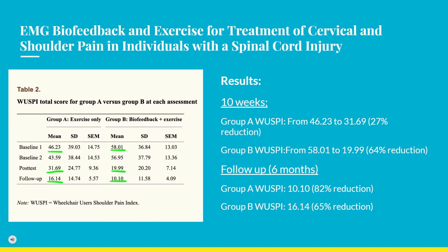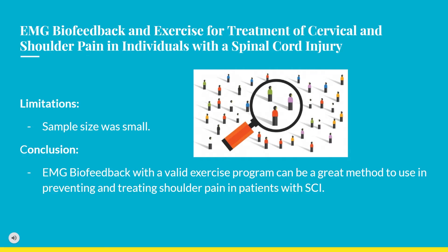At 10 weeks, participants who received EMG biofeedback plus exercise had a significant reduction in shoulder pain, whereas those who received only exercise did not. The reduction in shoulder pain with EMG biofeedback was twice that of exercise alone. At the six-month follow-up, Group B achieved an 82.3% reduction in shoulder pain and a lower WUSPI score than Group A. A limitation was the very small sample size. The findings indicated that EMG biofeedback may be valuable in preventing and treating shoulder pain when combined with a valid exercise program.